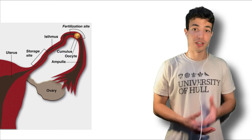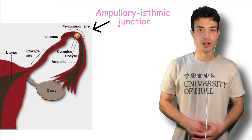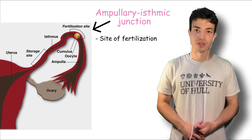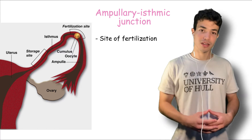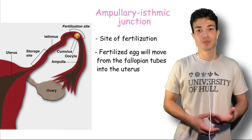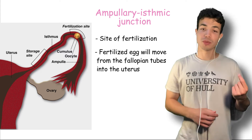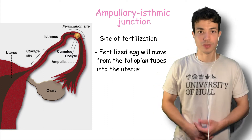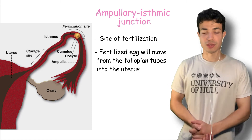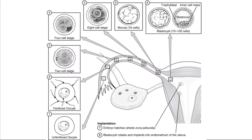We start at the ampullary isthmic junction where fertilization takes place. The fertilized egg, which is now called a zygote, will start moving from the fallopian tubes all the way into the uterus where implantation takes place. As we can see from this image, as the egg moves from the fallopian tubes into the uterus it will be dividing. So it will go from that one cell — the egg — and as soon as fertilization occurs it will divide into a two-celled zygote.